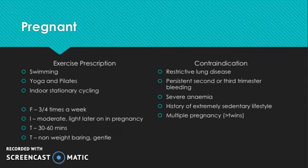Yoga and Pilates improve posture; stretching and strengthening exercises help to reduce pregnancy aches and pains. It's a form of relaxation, and the breathing techniques learned can be used during labour. It can also strengthen deep abdominal and pelvic floor muscles, which will be used during labour, making it easier. Indoor stationary cycling raises the heart rate, puts no strain on the bump since there's no pressure applied, has less impact on joints given the extra body weight carried, and provides a controlled environment with no weather changes or unexpected terrain.